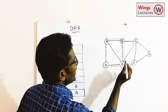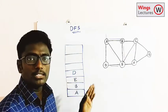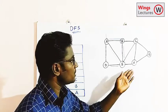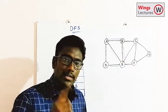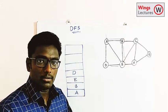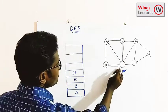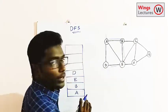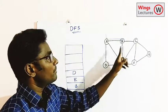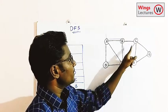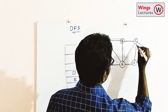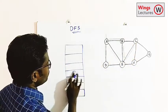From D the adjacent vertices are A and E — both already visited. There is no new vertex to go to, so we apply backtracking. Backtracking means going back to the previously visited vertex. We backtrack from D to E, where we still have options C and F.